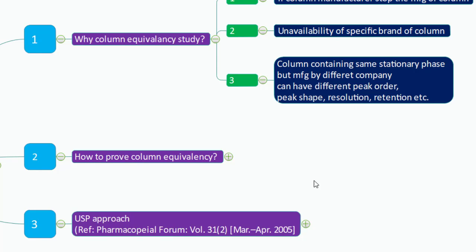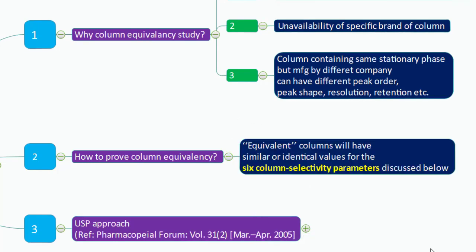How to prove column equivalency is the big question. If you can demonstrate that your alternative column has similar or identical values for six column selectivity parameters, you can justify that it is an equivalent column.